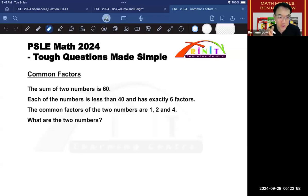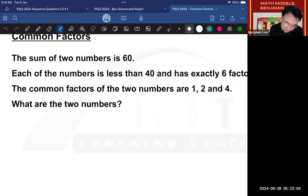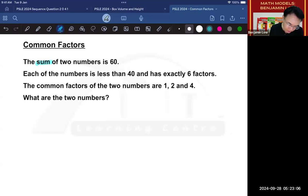Before we begin, always read the keywords. The sum of two numbers is 60. Each of the numbers is less than 40 and has exactly six factors. The common factors of the two numbers are 1, 2, and 4. Question: what are the two numbers?